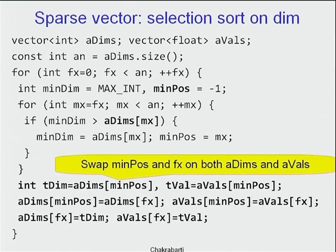The key point is that we swap min_pos and Fx on both dims and vals simultaneously. The important change from earlier selection sort: before I was swapping two values in one value array. Now I must swap the dim array and the val array in conjunction and in sync.